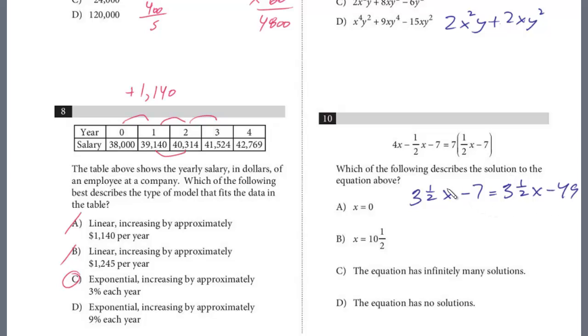These are going to cancel out, and we're left with minus 7 equals minus 49, or 7 equals 49. Is there any solution where 7 equals 49? It doesn't make any sense at all. So this question, the equation has no solutions, and it's D.